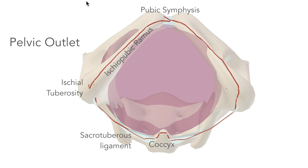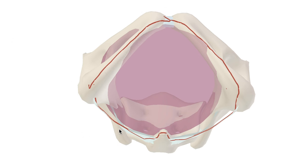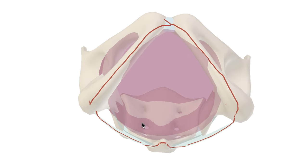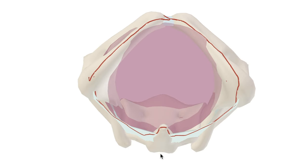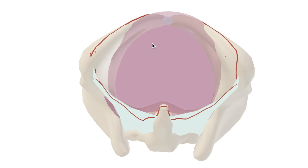The shape of the pelvic outlet varies quite a lot between male and female sex. It's notably bigger in females because we have to fit a whole baby through here.